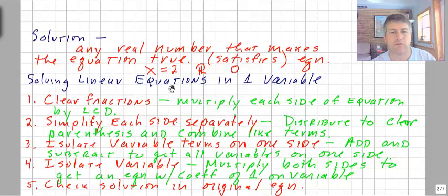The process for solving linear equations in one variable goes as follows. First thing you want to do is try and clear all the fractions. If there are fractions, we can multiply each side of the equation by the lowest common denominator. We multiply each term by that common denominator. That'll eliminate the fractions.